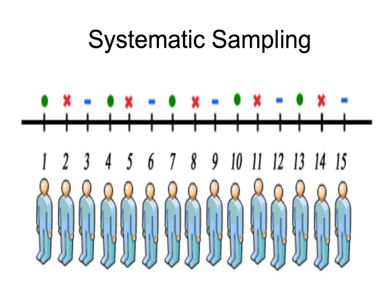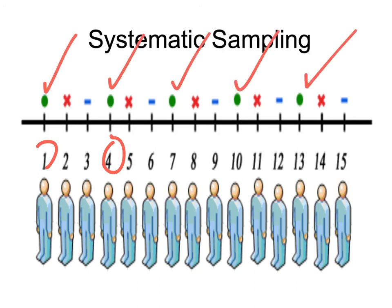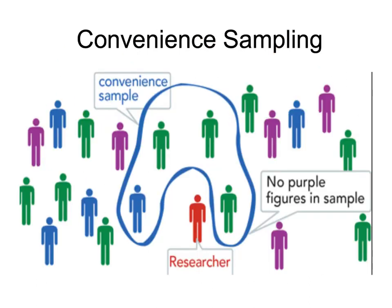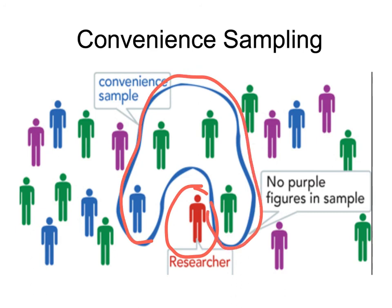With convenience sampling, you as the researcher stand in one spot and ask the people nearby. The potential problem is you may see all these individuals representing a certain age group, but you're not reaching them because you're restricting yourself to just what's around you. With convenience sampling, you have to be mindful that you don't miss out on different demographics.